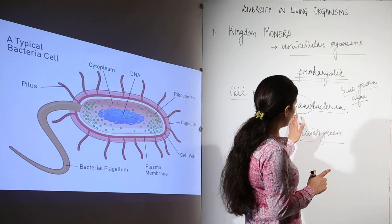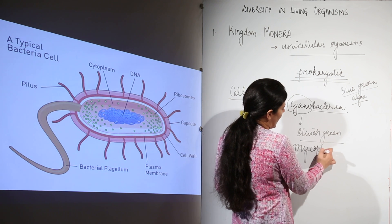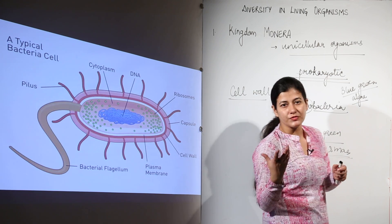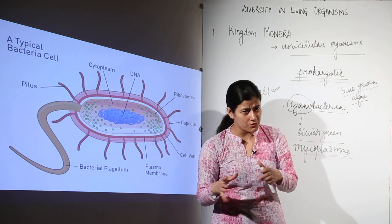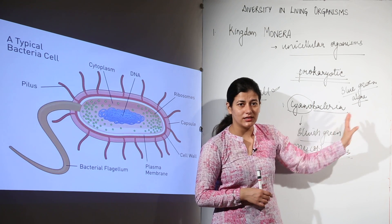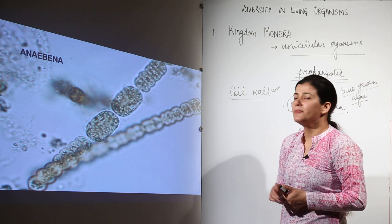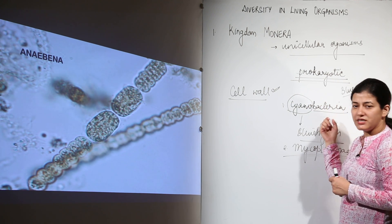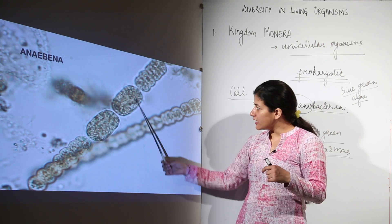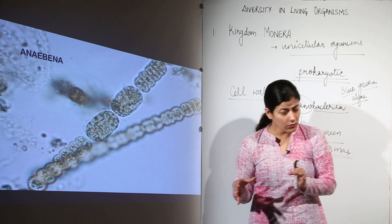Apart from cyanobacteria and typical bacteria, there is another category called mycoplasmas, which are even smaller in size. So Kingdom Monera includes bacteria, cyanobacteria, and mycoplasmas. Another example is Anabaena, which is a blue-green alga (cyanobacteria). Anabaena forms filamentous colonies — though unicellular, they form colonies — as seen in the image.